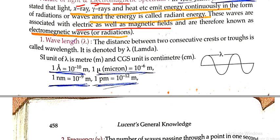The distance between two consecutive crests or troughs is called wavelength. The wavelength is denoted by lambda and measured in meter. We measure in the SI system in meter and CGS in centimeter.